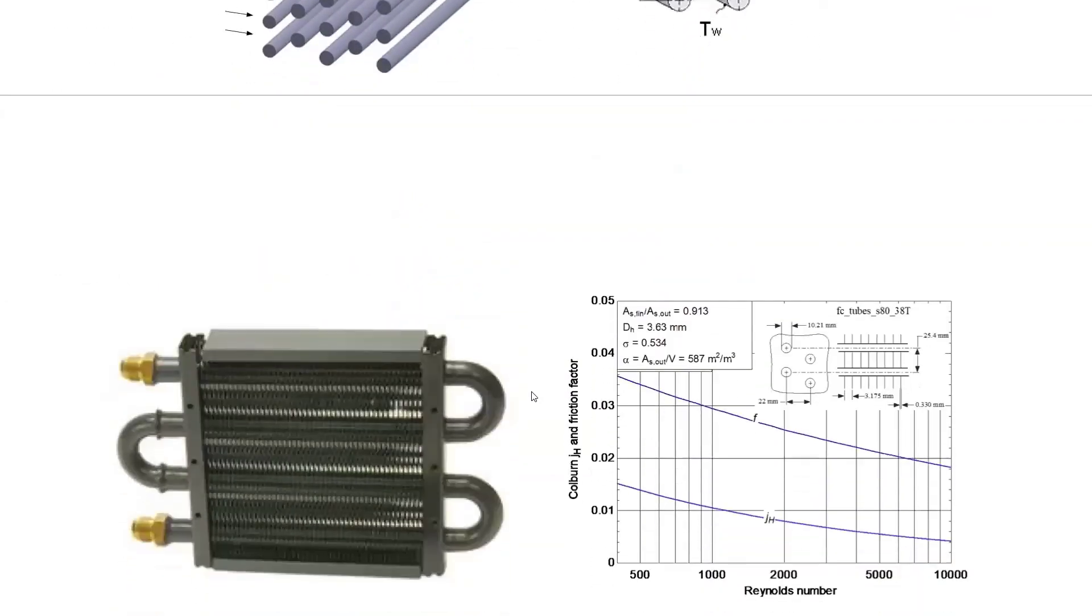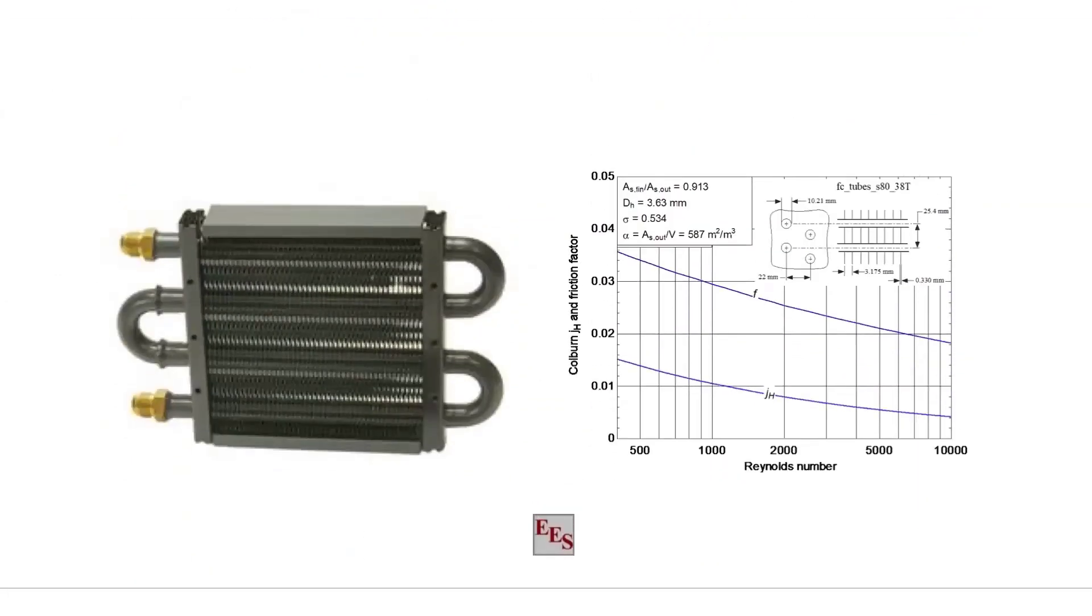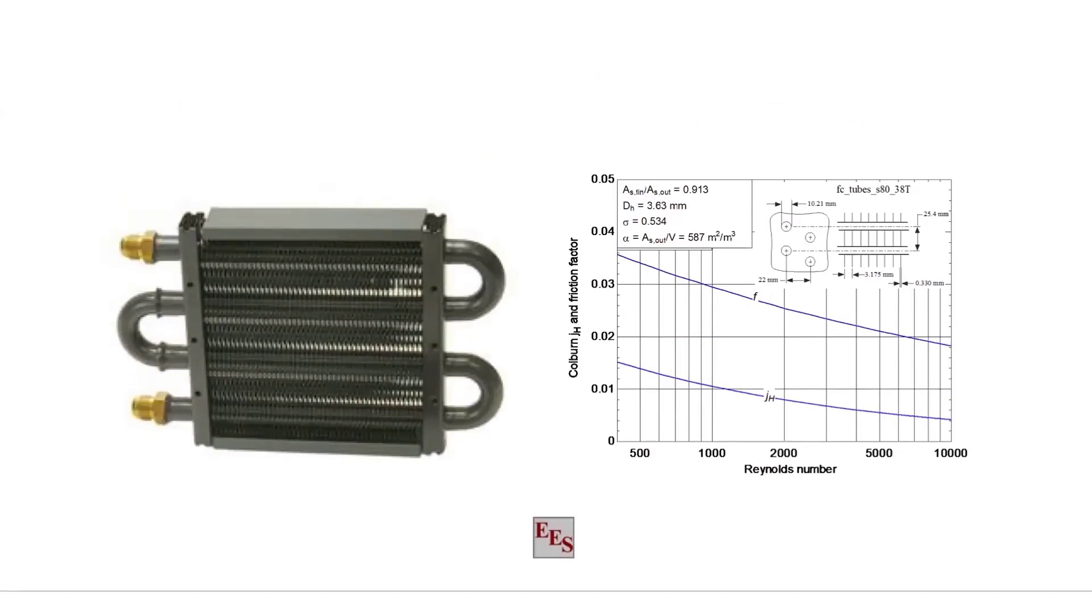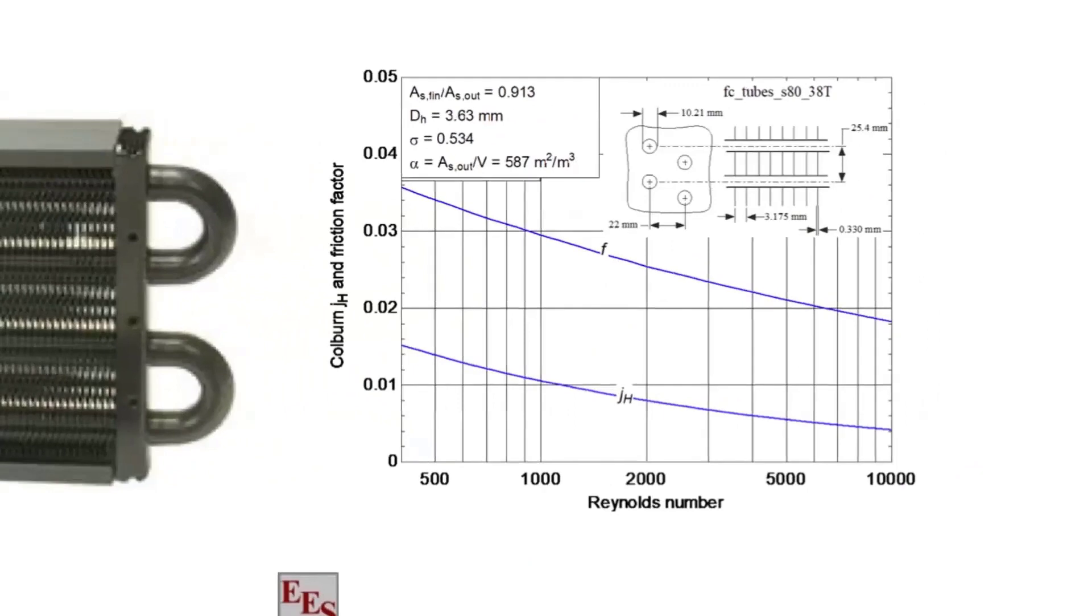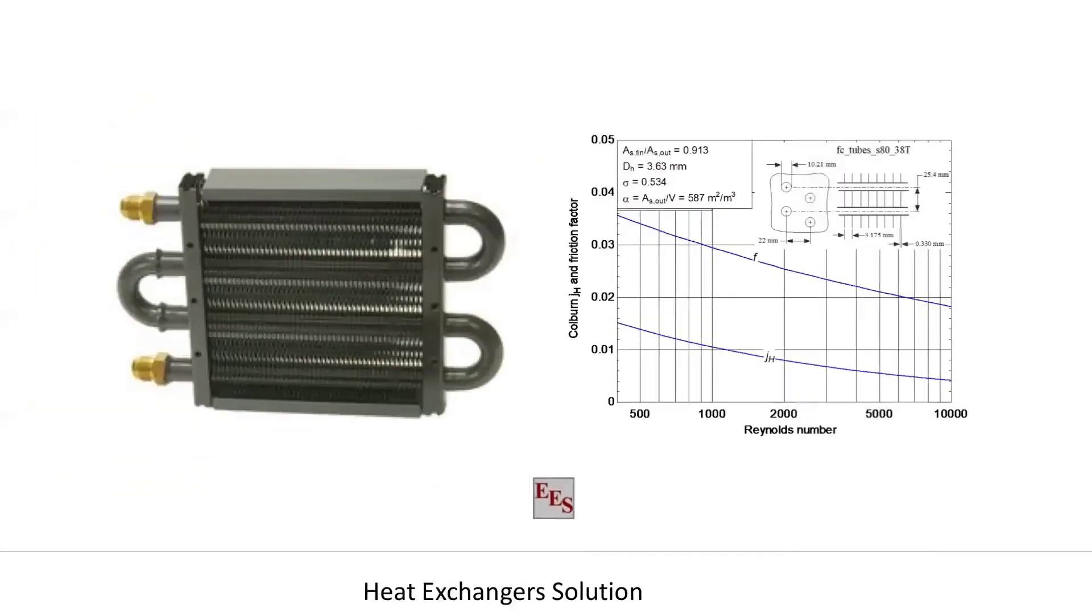This is the compact heat exchanger, the Colburn table that I was telling you about. So you actually look and plot out the Colburn friction factor and the heat transfer number J. This is what it would actually look like for a specific geometry. And the libraries and these will help you detail with these.